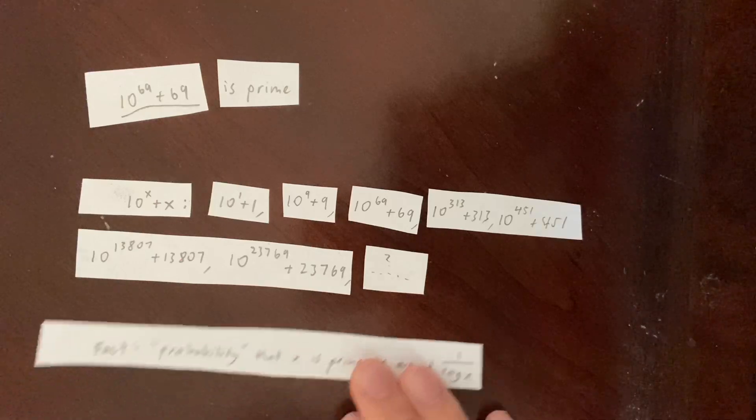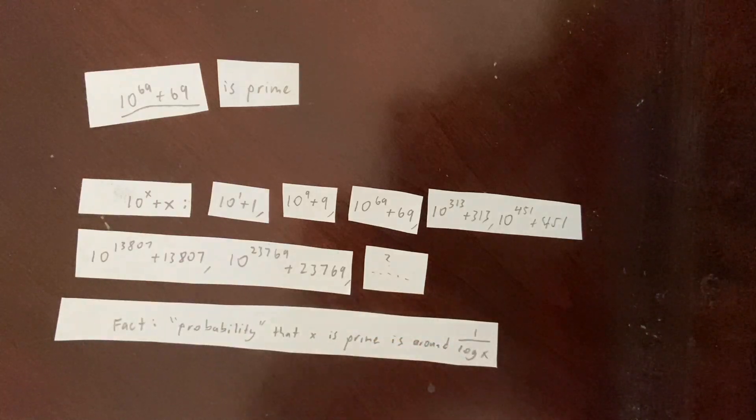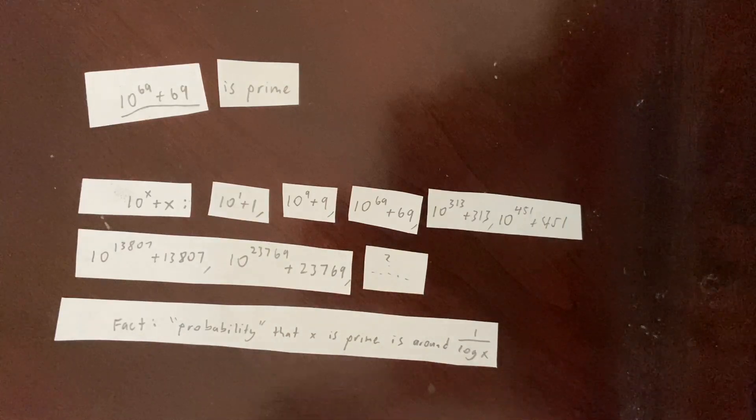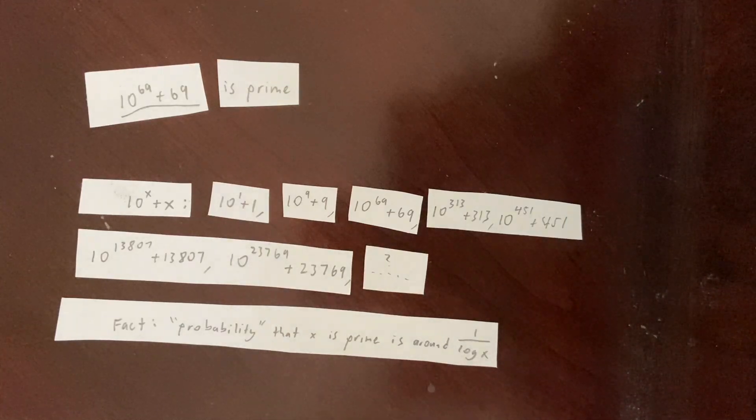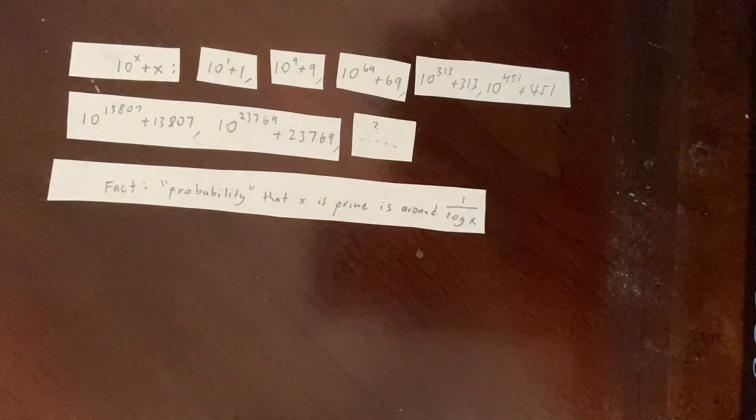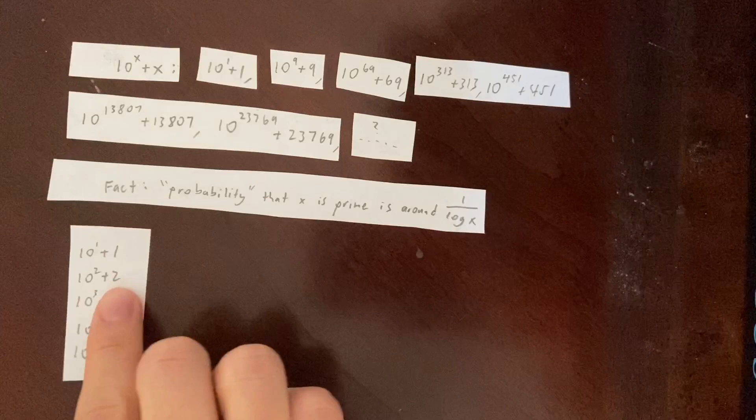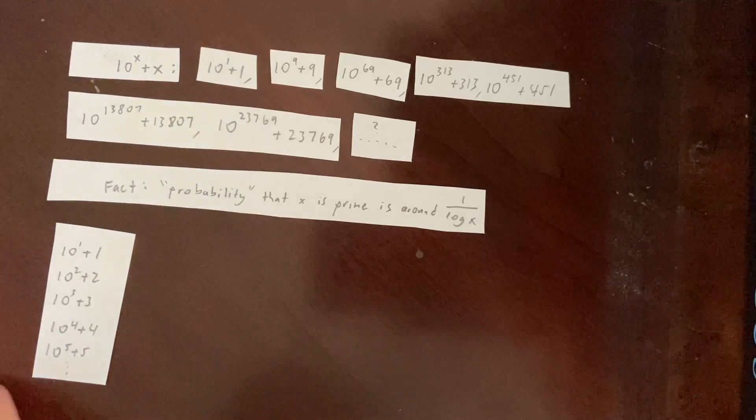To prove this, we're going to use a fact, sometimes called the prime number theorem, that the quote-unquote probability that a number x is prime is around 1 over log x. So let's take a look at this sequence of numbers: 10 to the 1 plus 1, 10 to the 2 plus 2, 10 to the 3 plus 3, 10 to the 4 plus 4, 10 to the 5 plus 5, and so on.